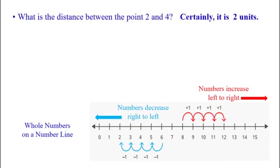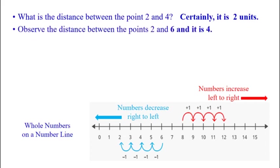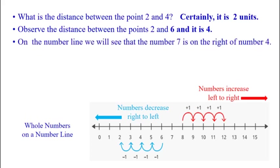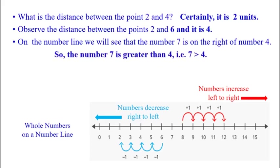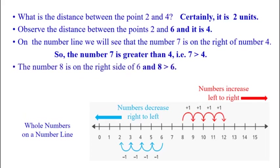What is the distance between the points 2 and 4? Certainly it is 2 units. Observe the distance between points 2 and 6 — it is 4. On the number line, we see that the number 7 is to the right of number 4, so the number 7 is greater than 4. The number 8 is on the right side of 6, and 8 is greater than 6.